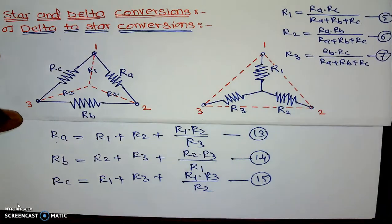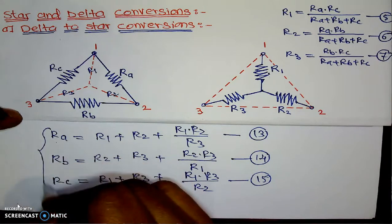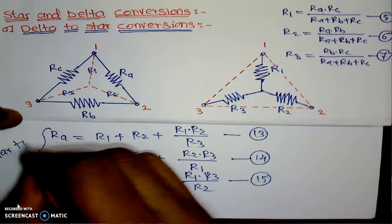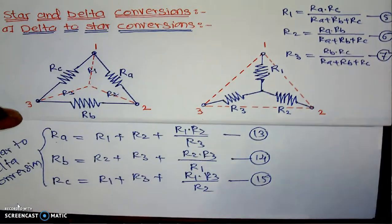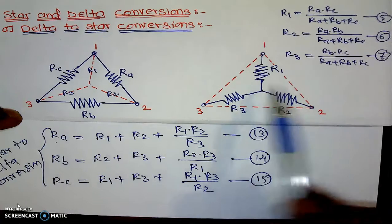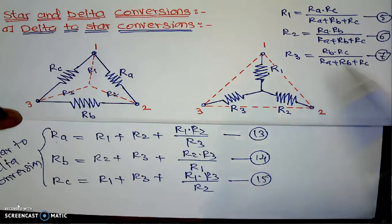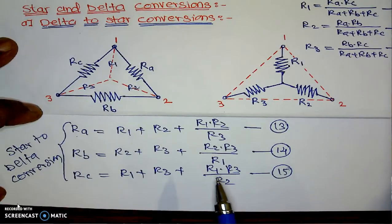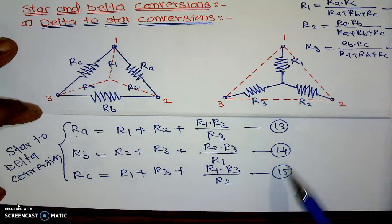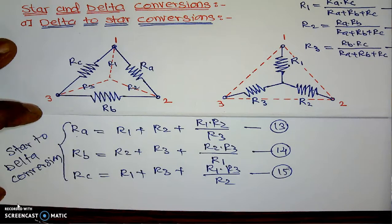These are the equations useful for star to delta conversion. Equations number 5, 6, and 7 are useful for delta to star conversion. If the given network is a star and we want to convert it to delta, then equations 13, 14, and 15 are useful for that star to delta conversion. That is all for this particular video. Thank you.